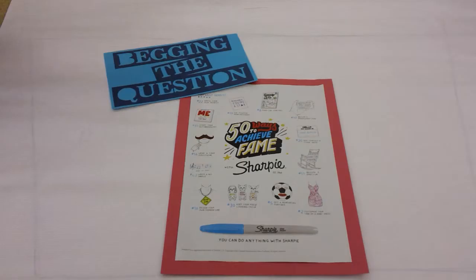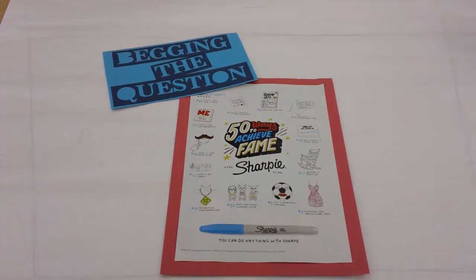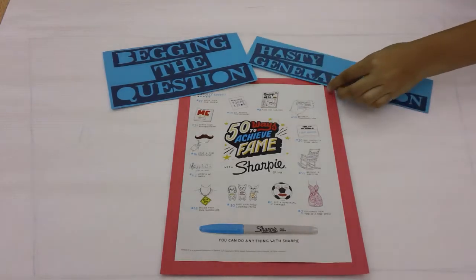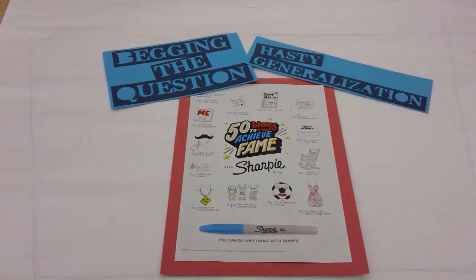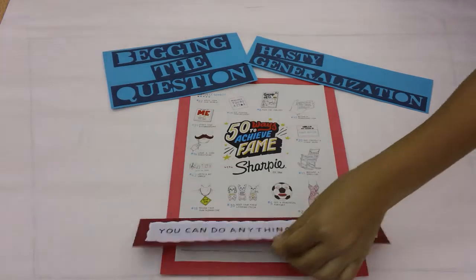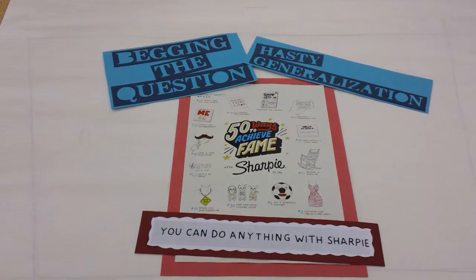Then there is begging the question, where the arguer makes an assertion as if he or she has already proven it. This advertisement makes multiple claims without proof. Begging the question relates to hasty generalization, which is making a conclusion without sufficient evidence — like the phrase 'you can do anything with a Sharpie.'